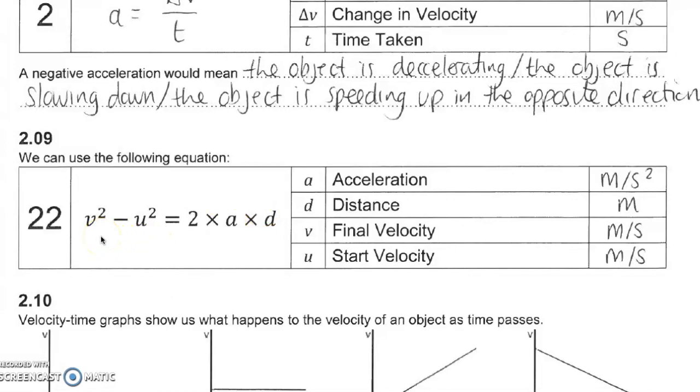Next equation is this one. So v squared minus u squared equals two times the acceleration times the distance. Sometimes they will use s as d, and sometimes they will quote the equation v squared equals u squared plus 2as. Please make a note of the units as well. Notice acceleration has got units of meters per second squared. And again, as I mentioned before, v stands for the final velocity, u stands for the initial velocity.